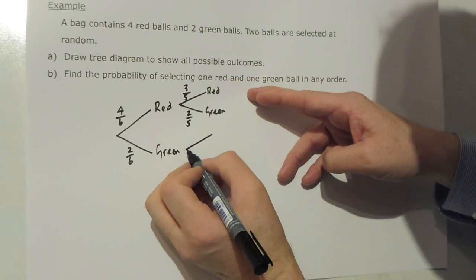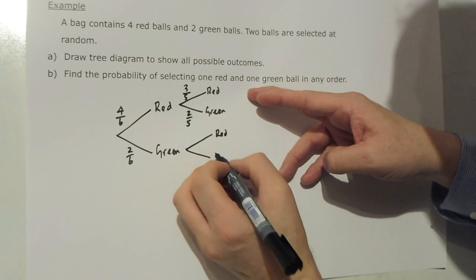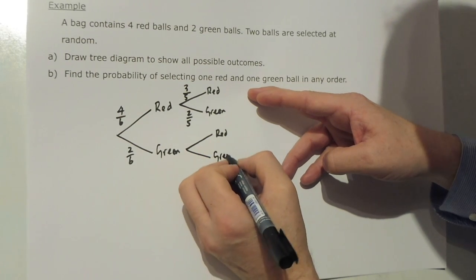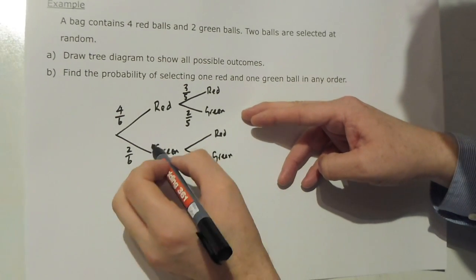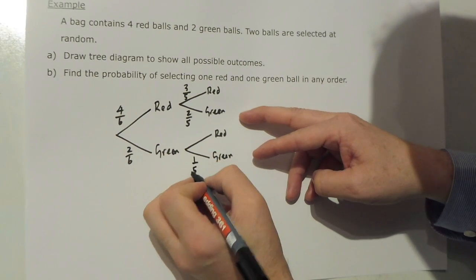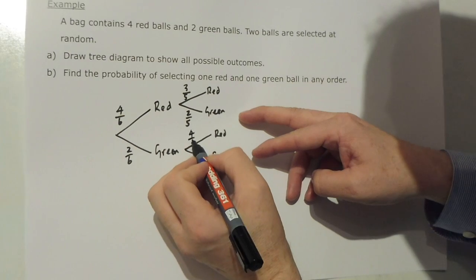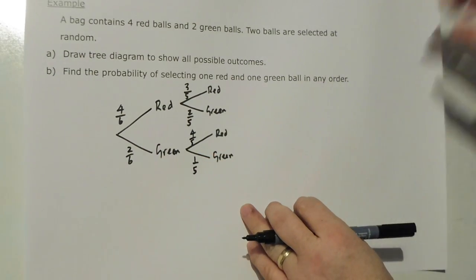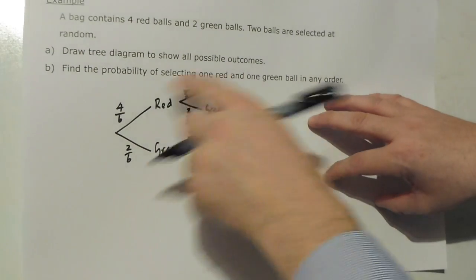However, if I selected a green I could get a red or I could get a green. The probability of getting a green once a green has been selected is now only 1 chance out of 5, but there are still 4 red out of 5 in that case. So there's the tree diagram.